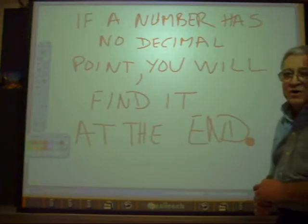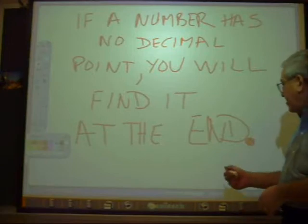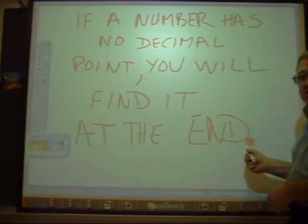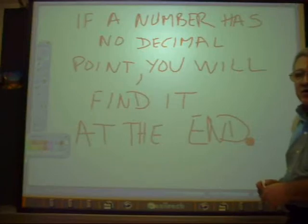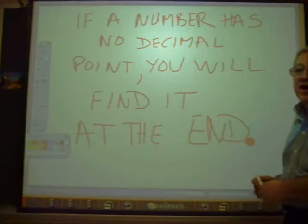Now you also need to know that if a number has no decimal point, you will find it at the end, period. Just like a period at the end of a sentence. So if you have a number like twelve, it's twelve point zero. So you need to know that or else you can't line up the decimal points.